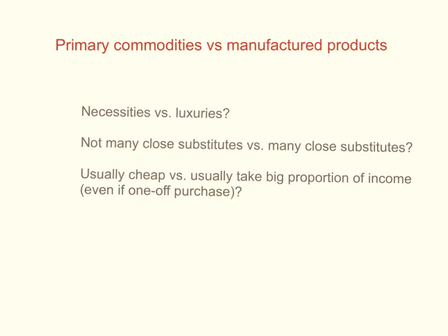The second real-world application of price elasticity of demand is how it relates to primary commodities versus manufactured products. Primary commodities are commodities that arise from the use of natural resources — agricultural products, fishing, forestry products, cotton, rubber — all products that arise from the use of natural resources.